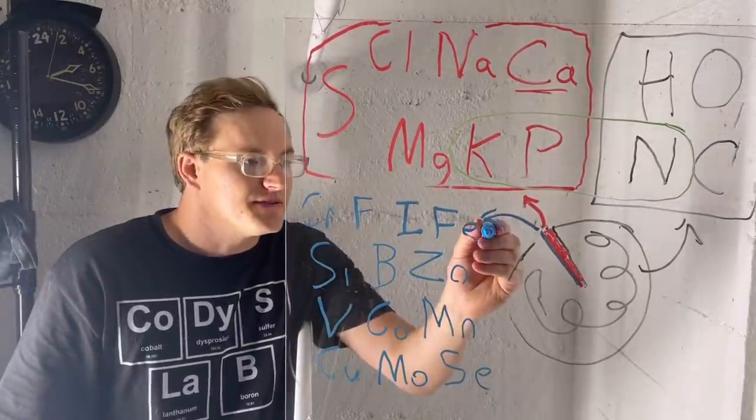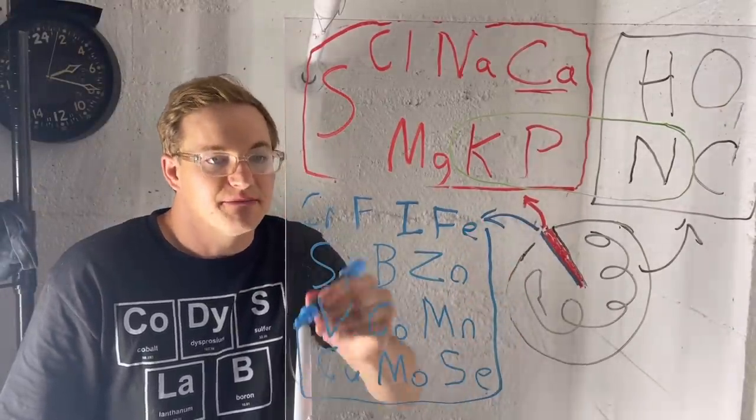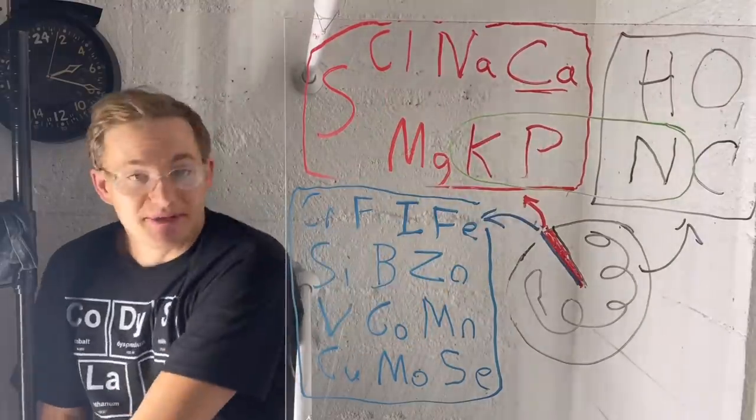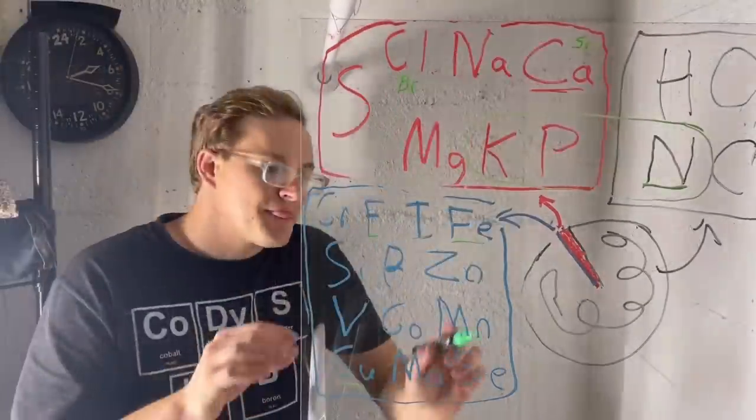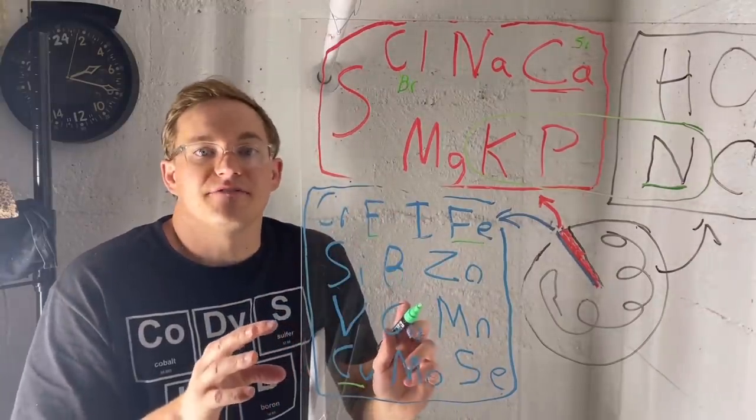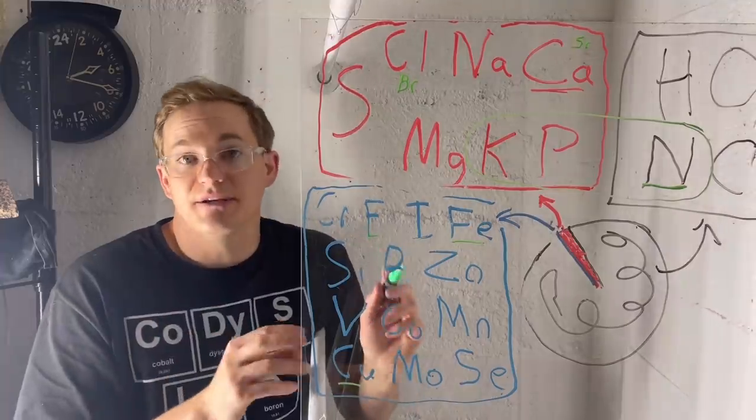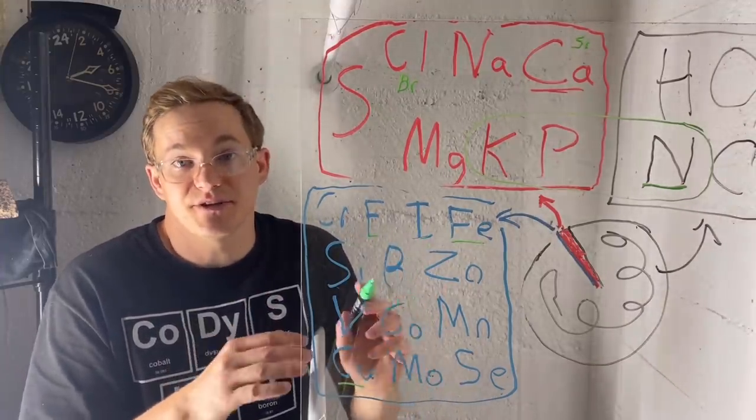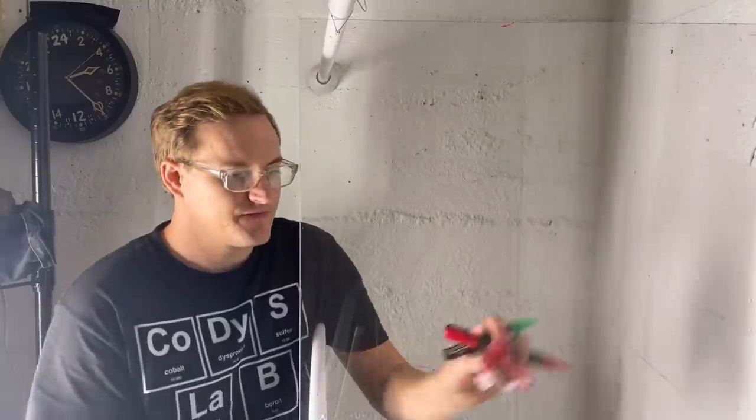So these are your trace elements, and this is the list of elements necessary for life. But back to these trace elements, they are absolutely necessary for life but only needed in very small amounts, which is fortunate because they are only available in small amounts on the earth's surface.